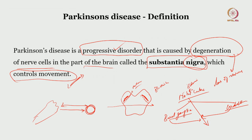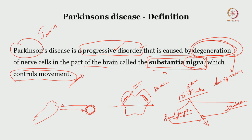When substantia nigra undergoes neuronal degeneration, movement modulation is disrupted. The disease is named after James Parkinson, a physician who first described it in an individual he called having 'shaking palsy' — because the patient had tremor. These are the core cardinal features of Parkinson's disease. A mnemonic to remember the cardinal manifestations is TRAPPED, because patients literally look like being trapped.